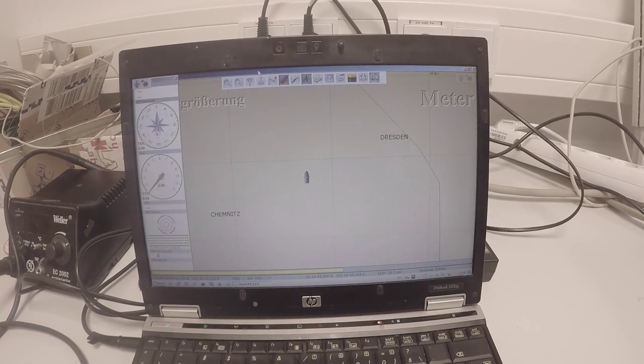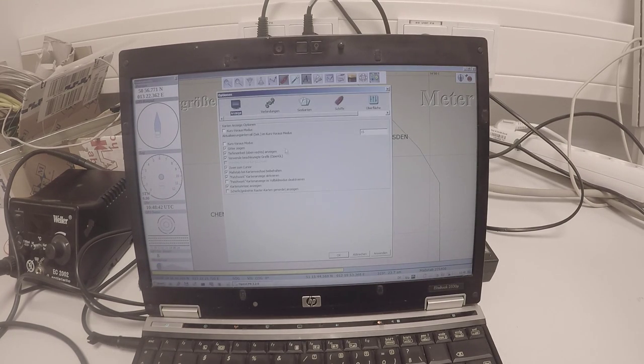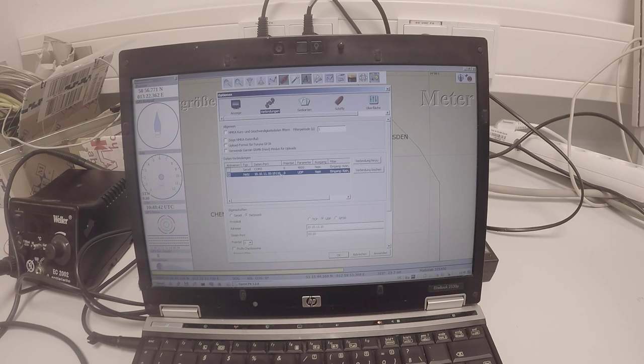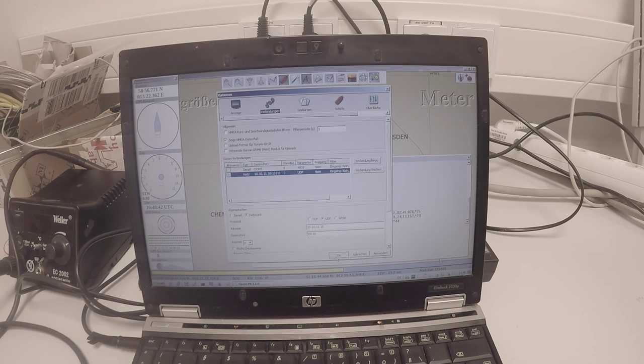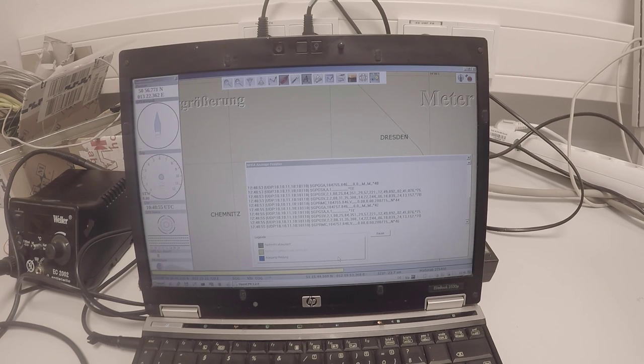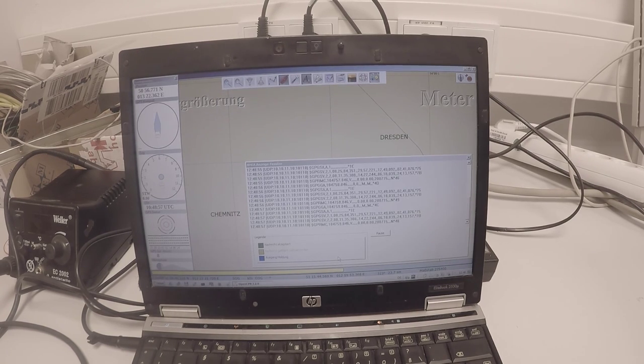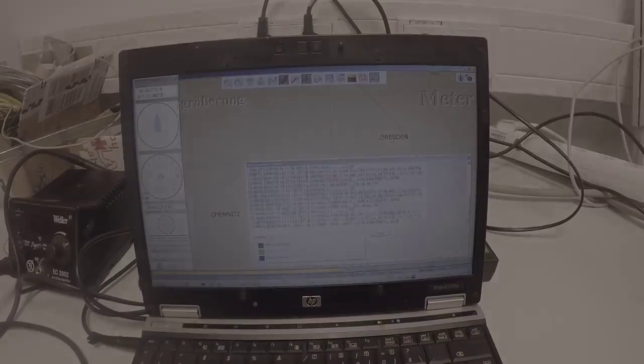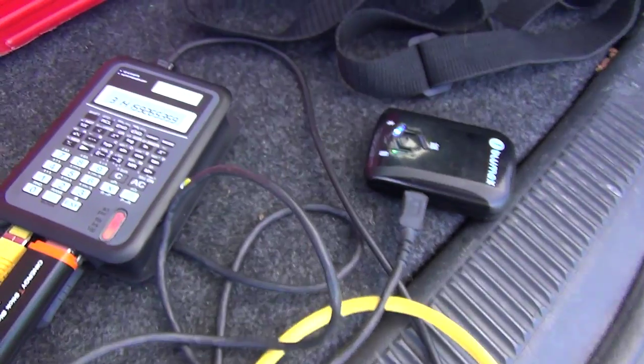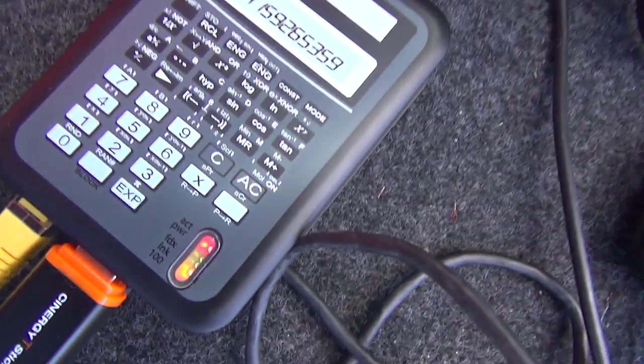And then I can start my OpenCPN. And if I go to the NMEA raw data on this port, you see it's already sending GPS data. No valid data because I don't receive there anything.